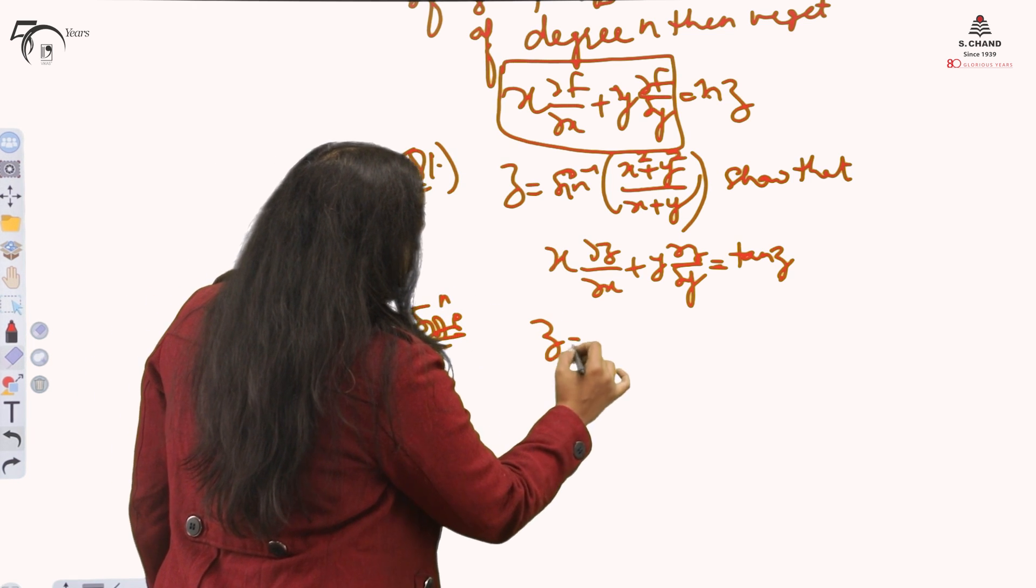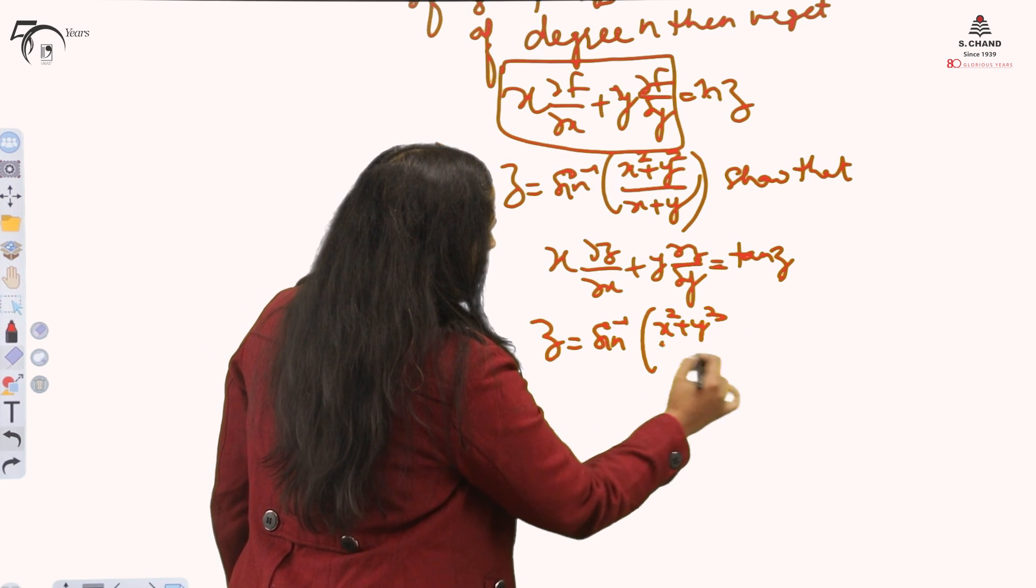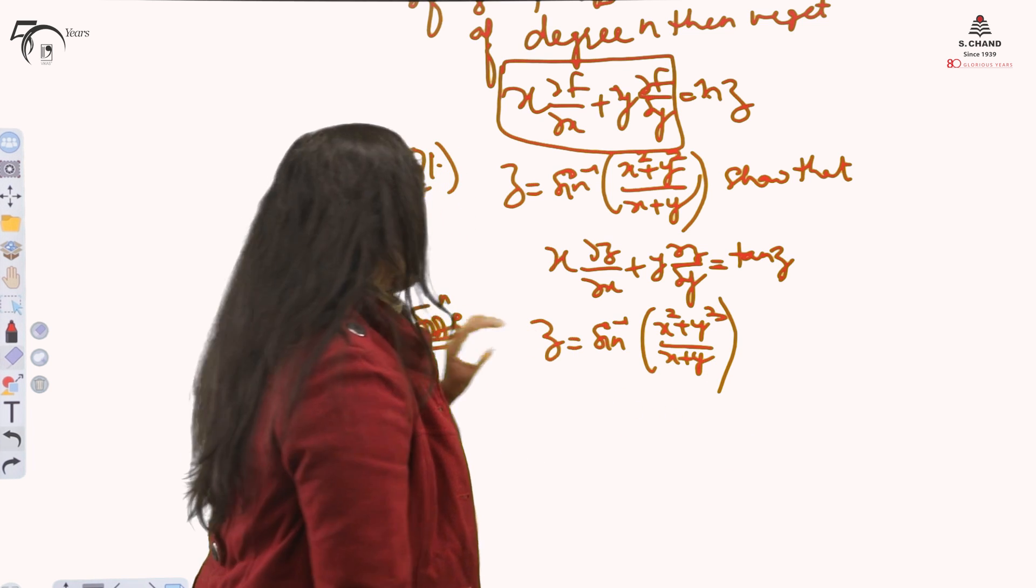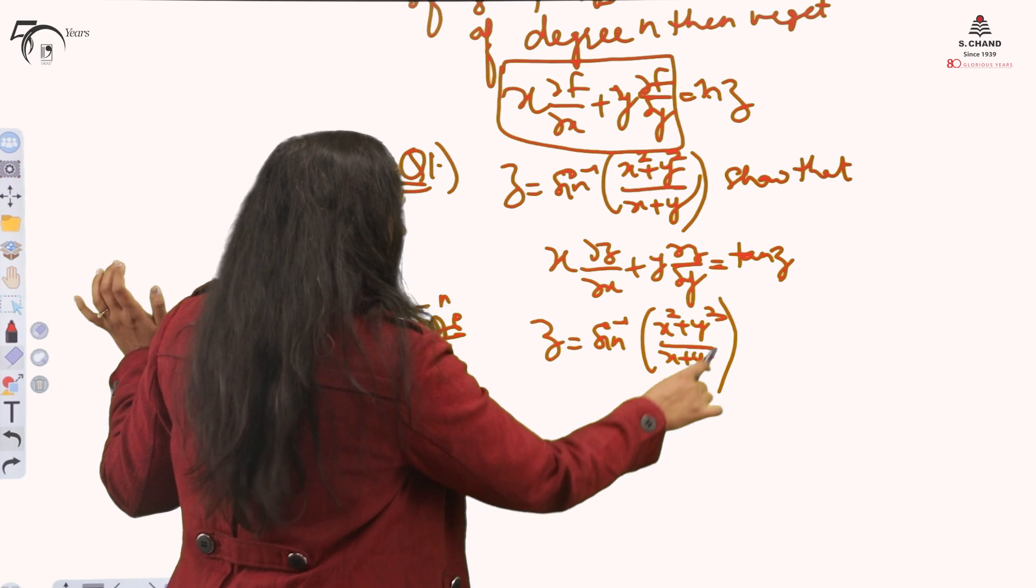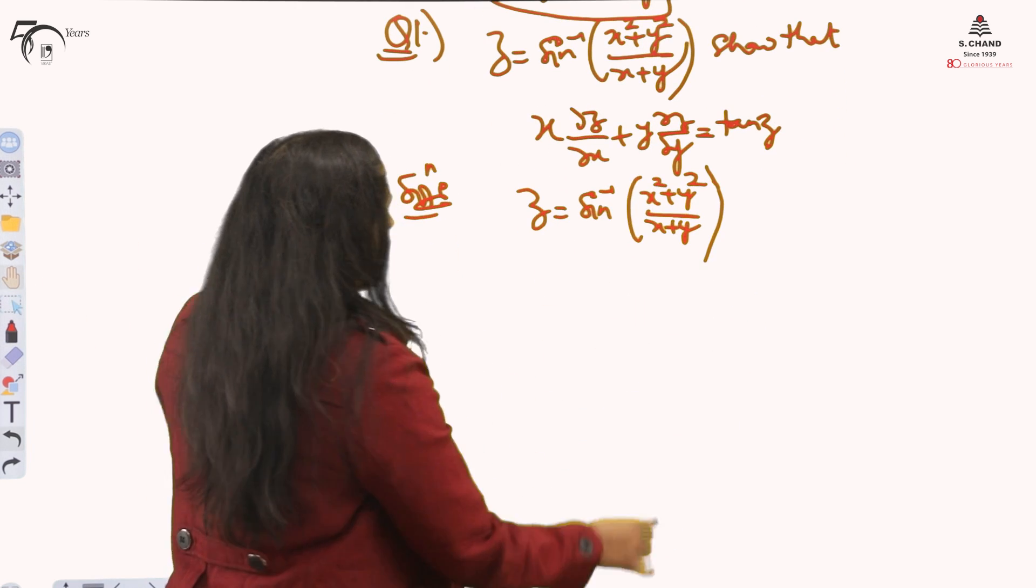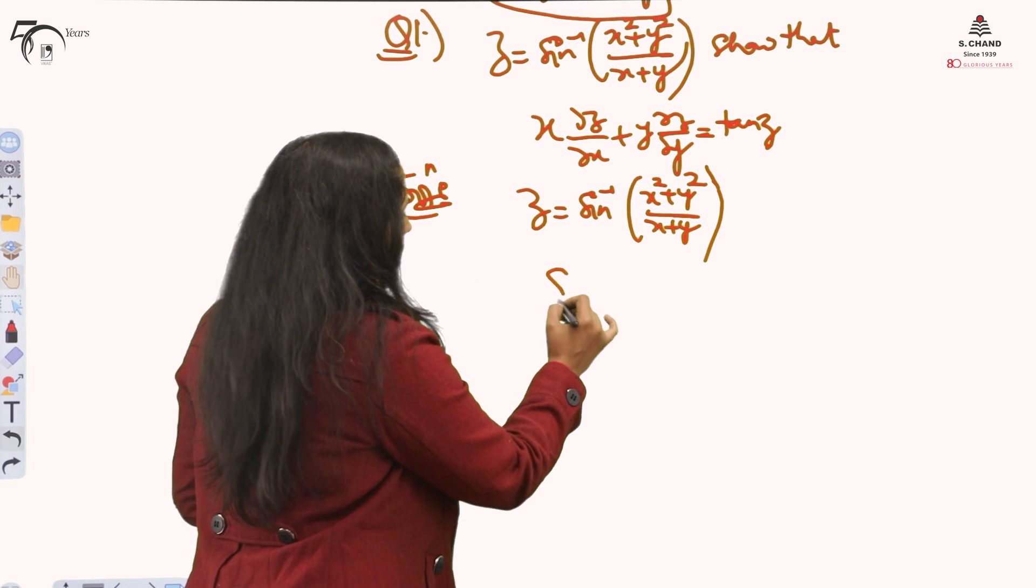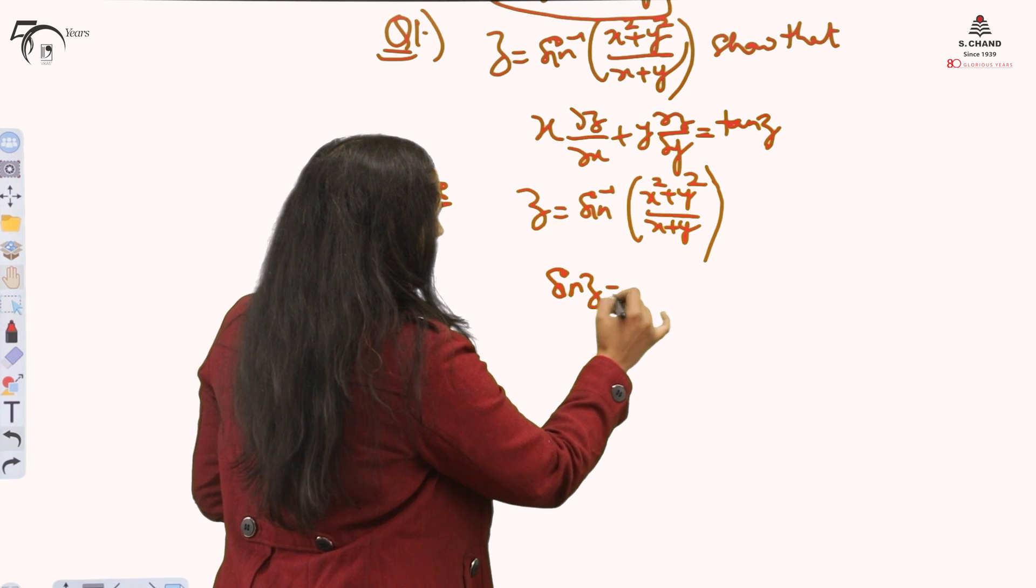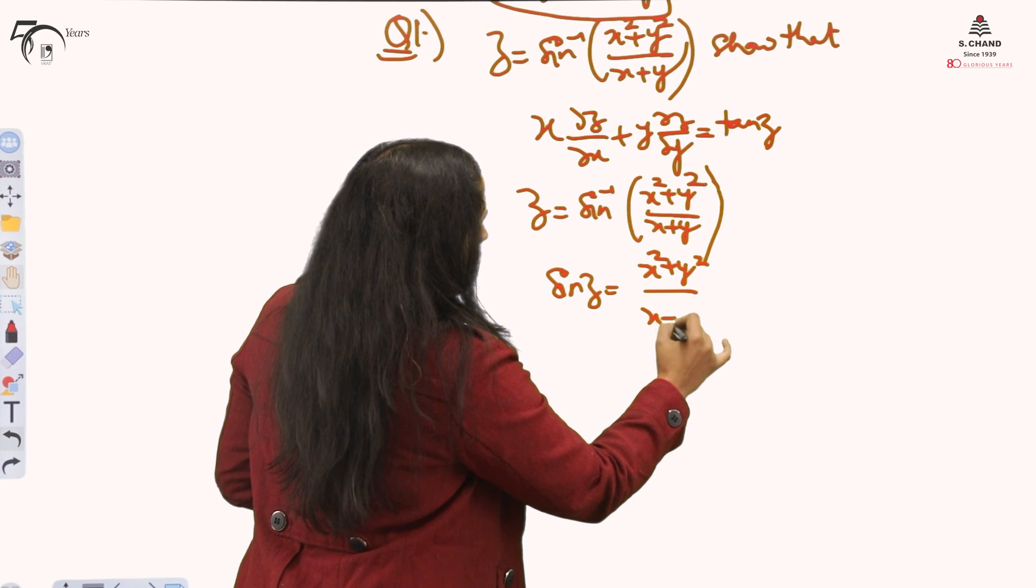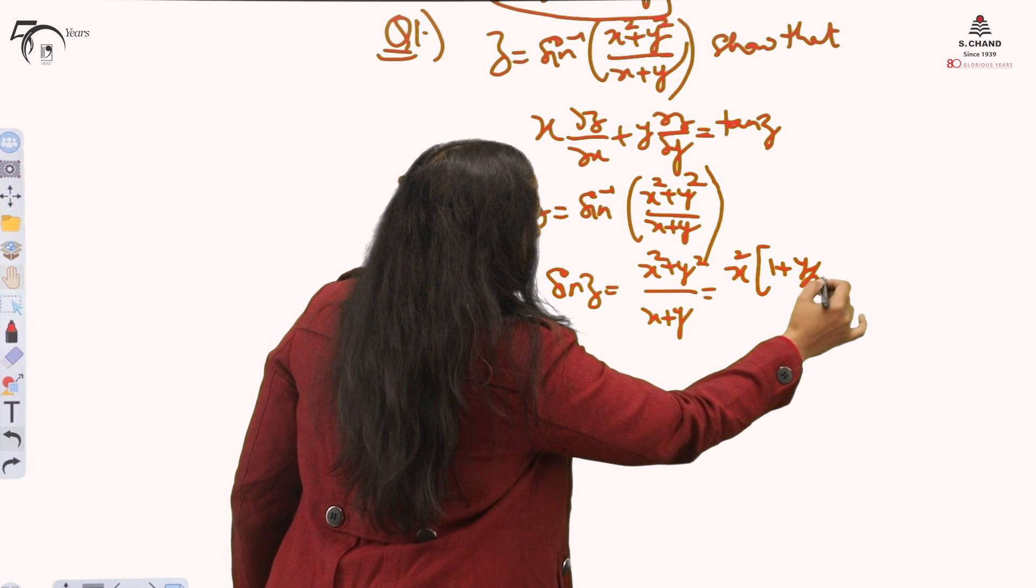My z is sine inverse of (x squared plus y squared) over (x plus y). When I am just looking at the question, it is not homogeneous. But now let's see what I am doing. I just take this sine inverse to the other side, so it will become sine z. And I take out the highest power of x from numerator and from the denominator.